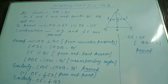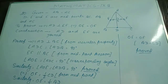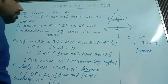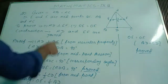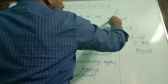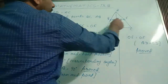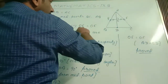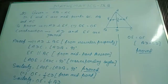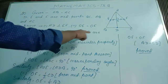Now question number 20. In triangle ABC, it is an isosceles triangle with AB equal to AC. D, E and F are midpoints of BC, AB and AC respectively. Prove that the line segment AD is perpendicular to EF and is bisected by it. Construction: AD and EF are joined.